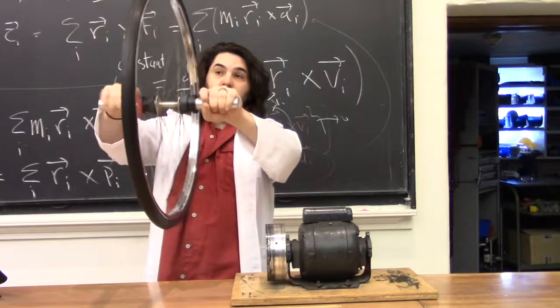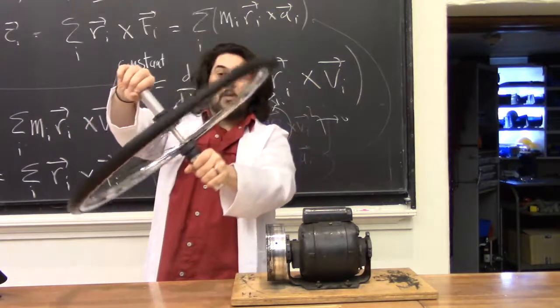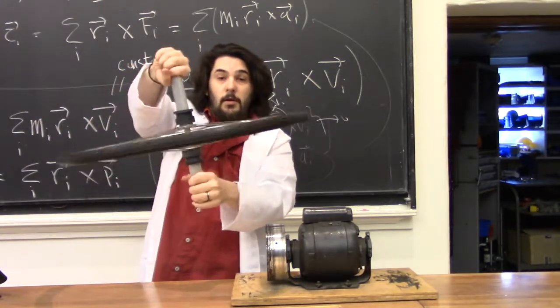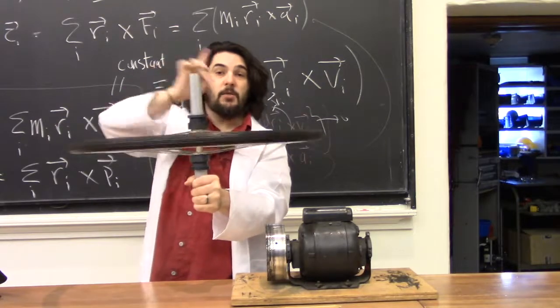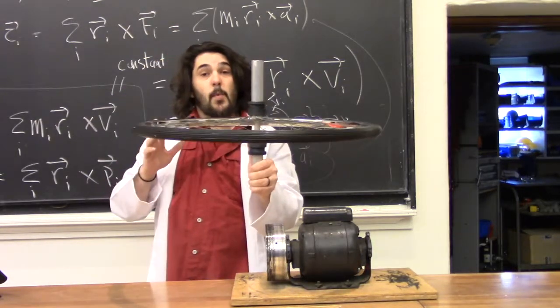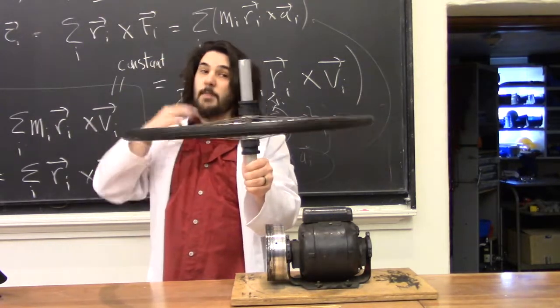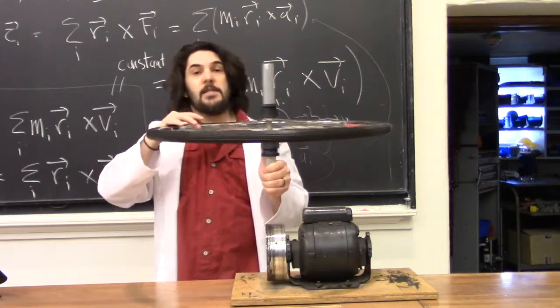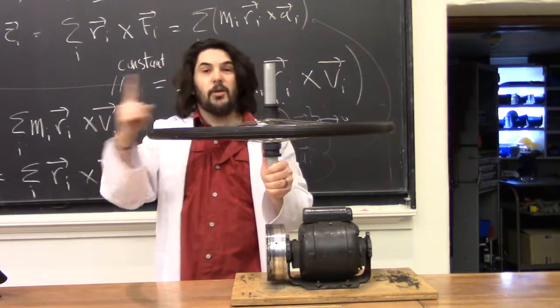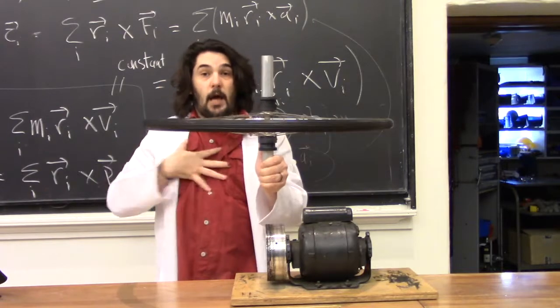Conservation of momentum says that the entire me plus bike wheel system has to maintain a zero angular momentum this way, which means I'm going to have to spin this way in order to take any external torque out of the system.